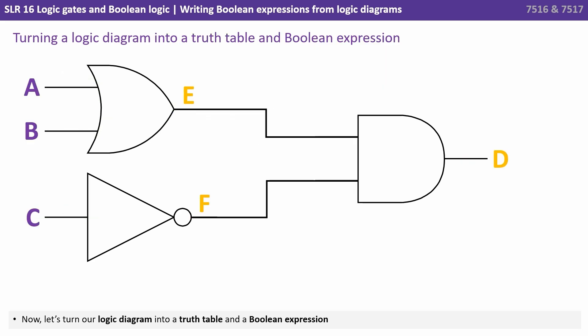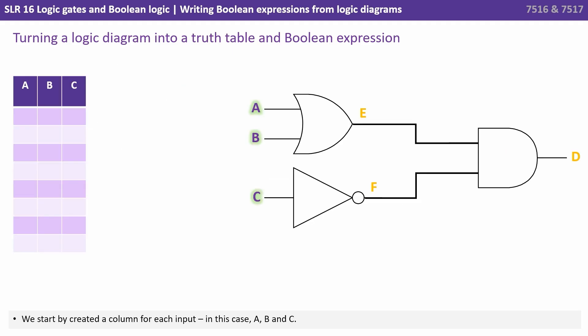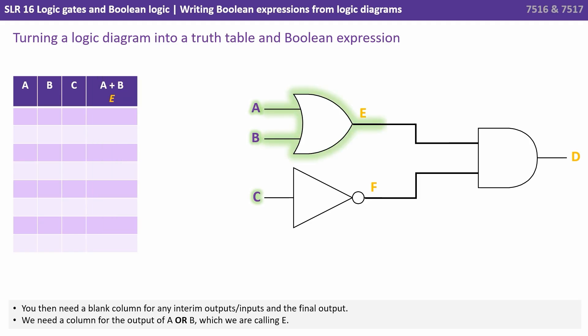Now let's turn our logic diagram into a truth table and a Boolean expression. We start by creating a column for each of the inputs in this case A, B and C. We then need a column for any interim outputs or inputs and the final output.